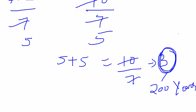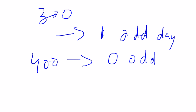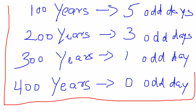Similarly, for 300 years the result comes out to be 1 odd day, and for 400 years the result is 0 odd days. After that, the pattern repeats itself — for every multiple of 400, the odd days are 0. So for 800 years it's 0, for 1200 years it's 0, and so on. To summarize: 100 years = 5 odd days, 200 years = 3 odd days, 300 years = 1 odd day, 400 years = 0 odd days.